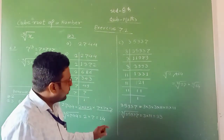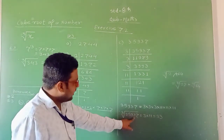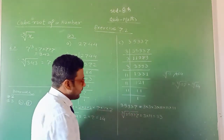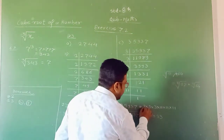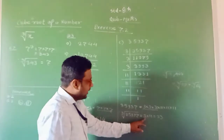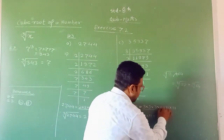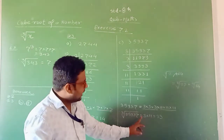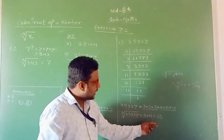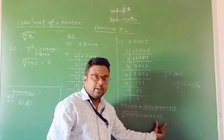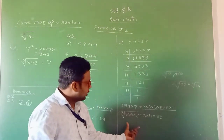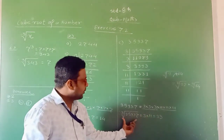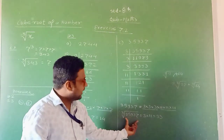To find the cube root of 35,937, we take one number from the group of three 3s — that is 3 — and one from the group of three 11s — that is 11. Their multiplication, 3 into 11, equals 33. So 33 is the cube root of 35,937.